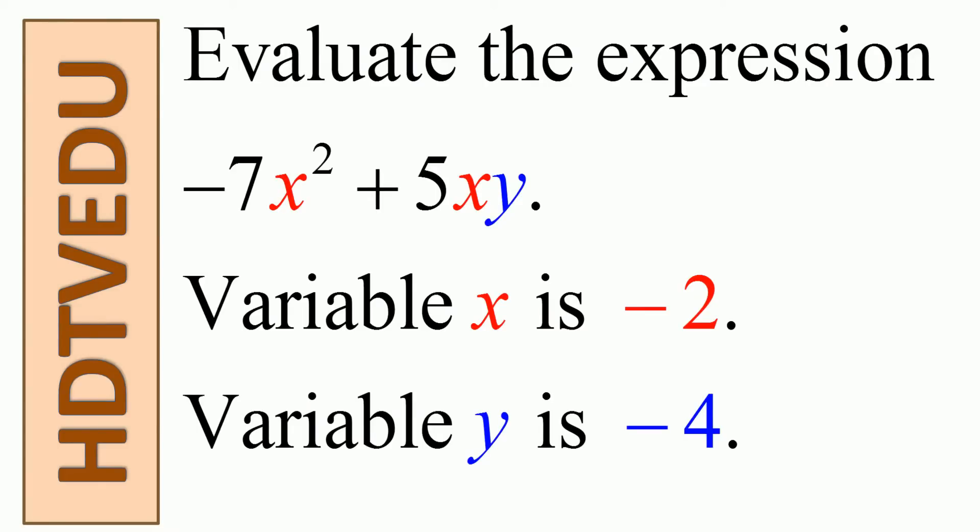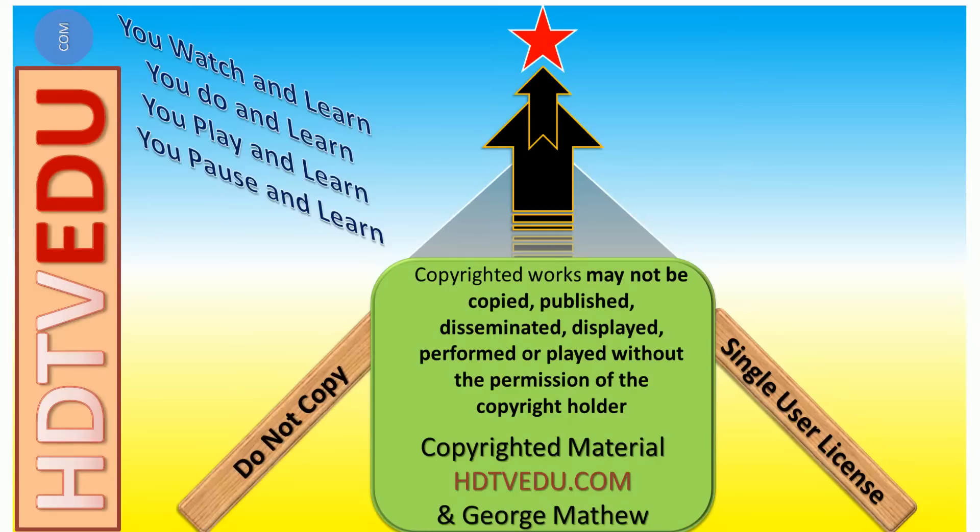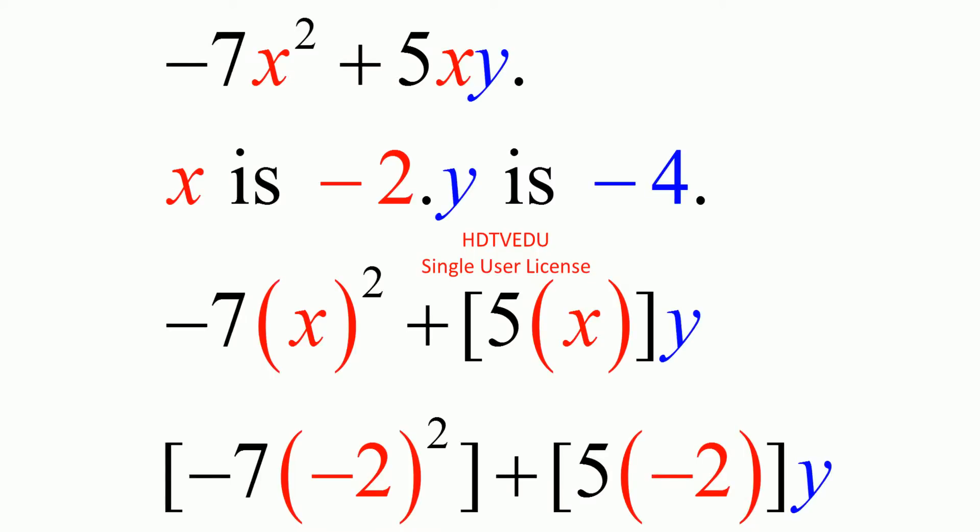Evaluate the expression negative 7x squared plus 5xy, where variable x is negative 2 and variable y is negative 4. We are given two variables x and y. First, we substitute x equals negative 2 and keep y as it is. Then, after we are done with that, substitute y equals negative 4 and evaluate the expression.